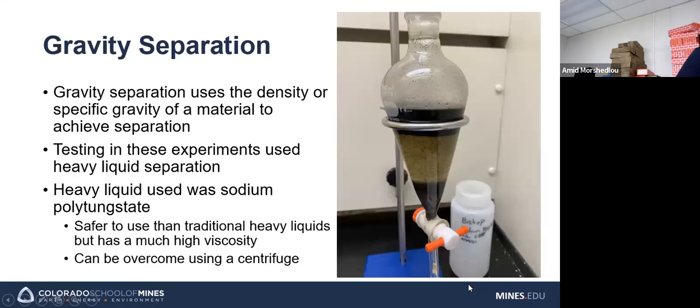So I've also done some gravity separation techniques, and gravity separation is basically using the density or the specific gravity of materials in the ore to achieve a separation. And so far all my gravity testing has been done with heavy liquid separation, where we use a liquid that has a specific gravity greater than water, preferably in between the target material and the gang material to achieve a separation. So traditionally heavy liquids can be pretty toxic, but in this case we're using a sodium polytungstate, which is much less toxic than traditional heavy liquids. But as you increase the specific gravity of it, the viscosity goes way up to the point where you can't get anything to settle to the bottom. However, this can be overcome using a centrifuge.